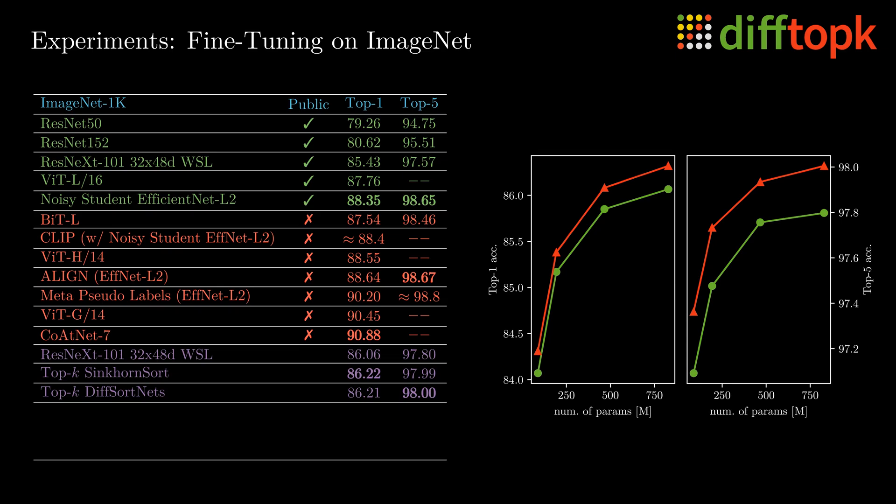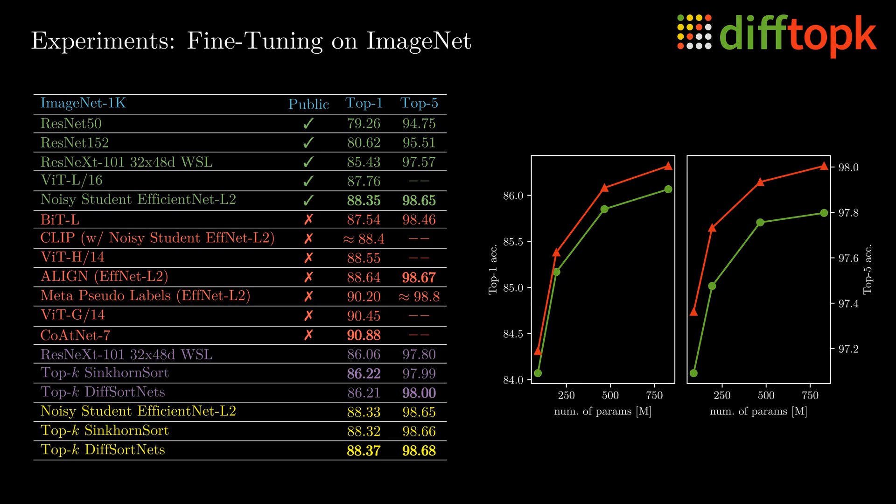Here, the red triangle is our method and the green circle is the baseline. We also fine-tune the best available model which is the Noisy Student EfficientNet L2 and also here we improve upon the original model.